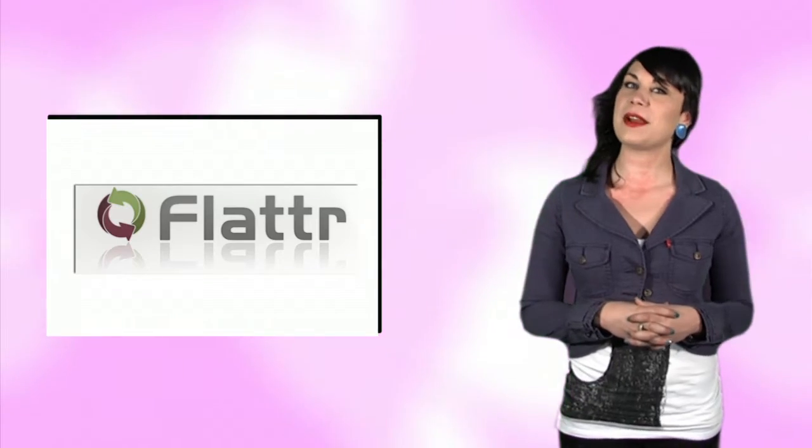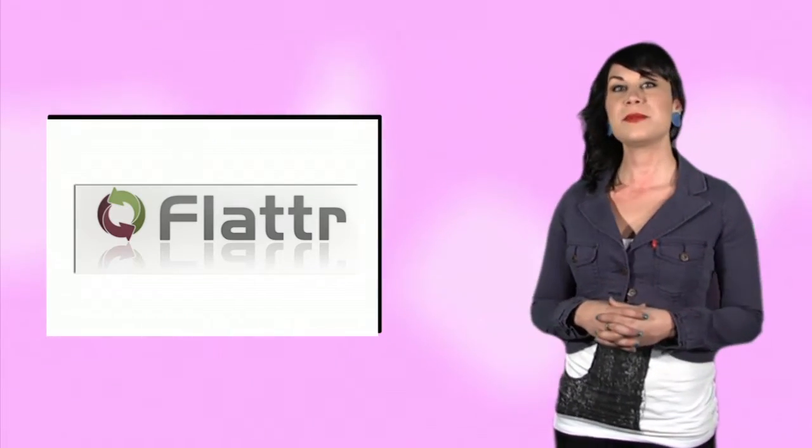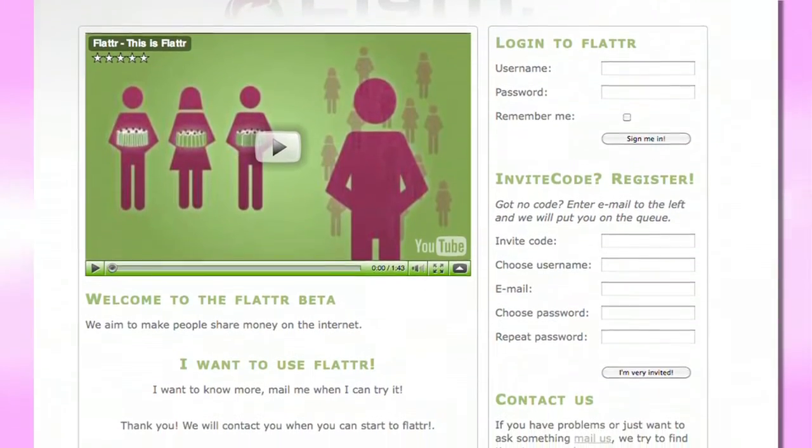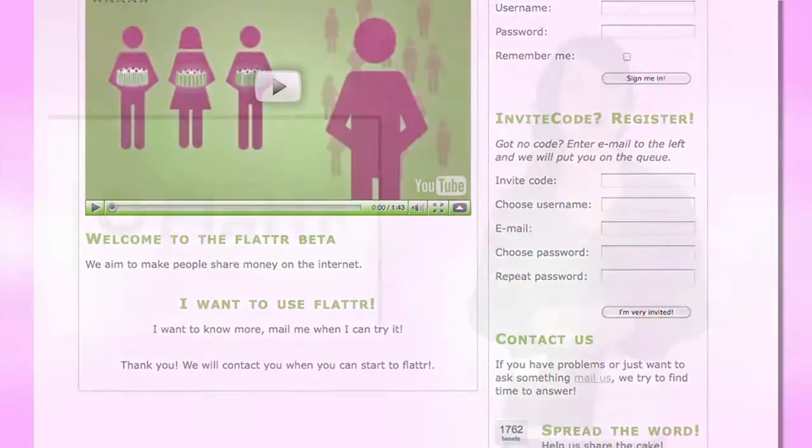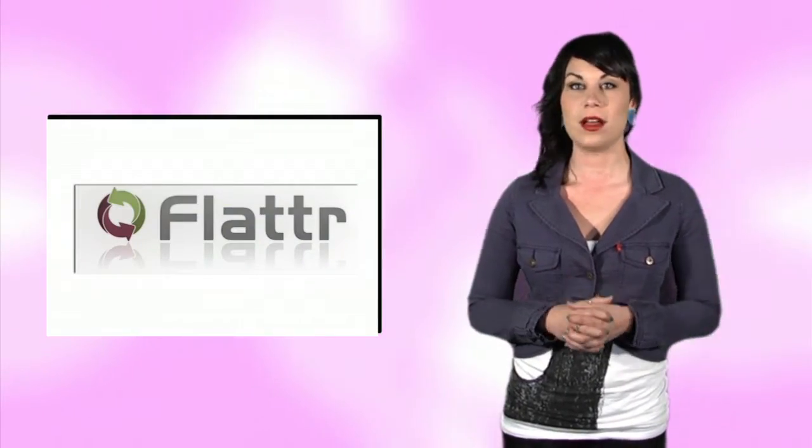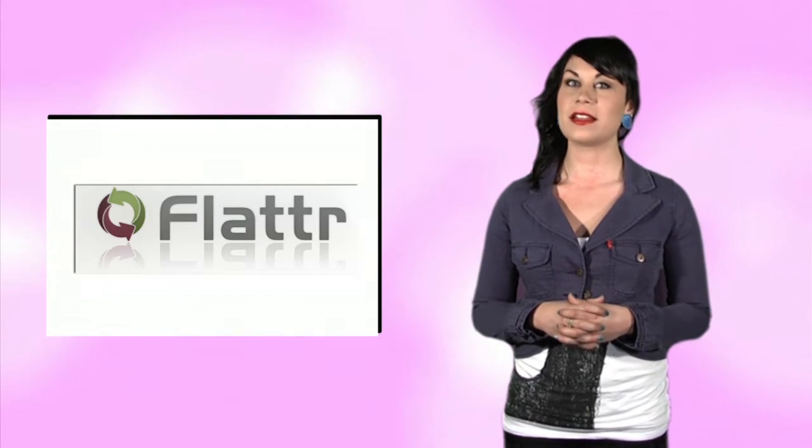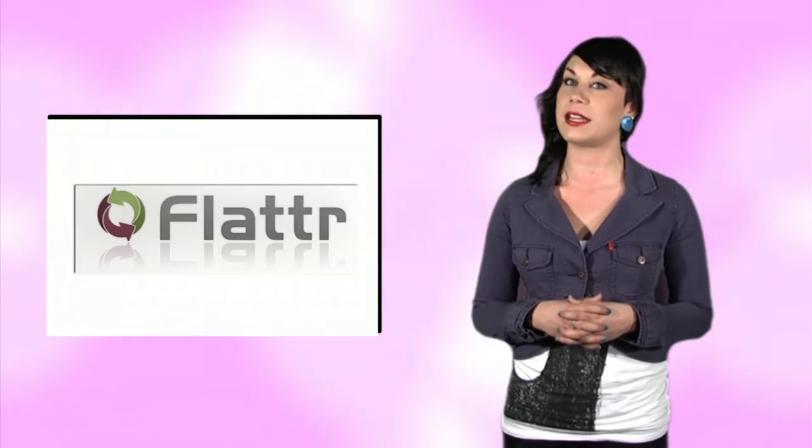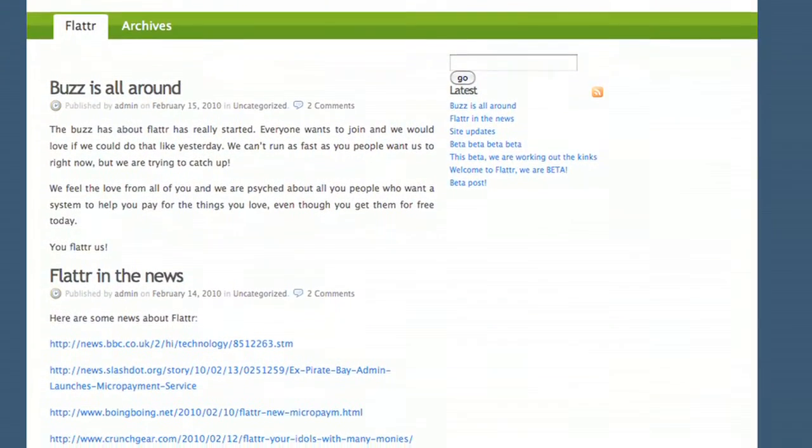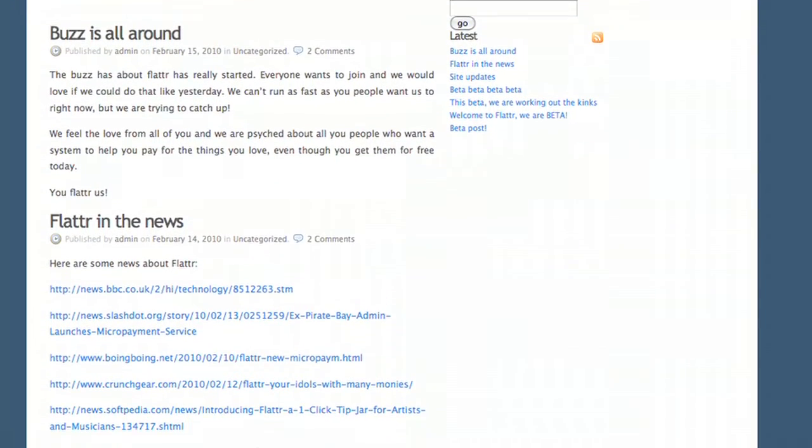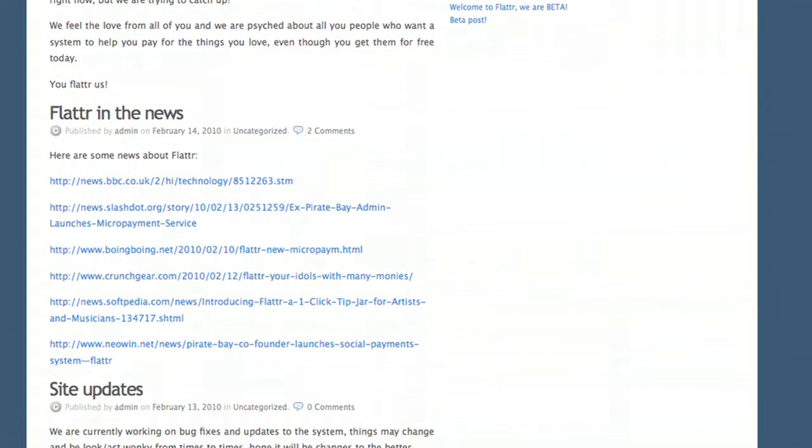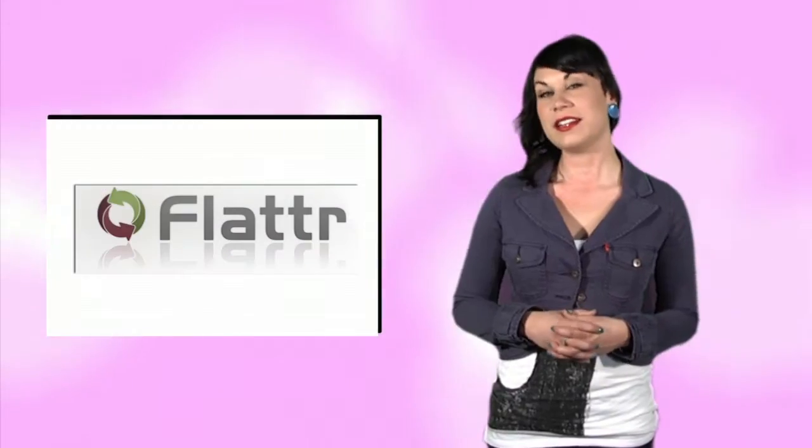Peter Sunde, who used to be a Pirate Bay spokesperson, has been working on many different projects and one of them is called Flattr. Flattr is a mashup of sites like Digg and Reddit and an online payment service like PayPal. What makes Flattr different is the fact that users of Flattr can set a monthly budget as low as $2 and at the end of the month they share the money with the creators of the content that they have liked. You can give Flattr a try by signing up for a beta account. Here is a video describing Flattr a little better.